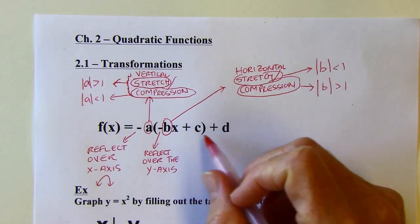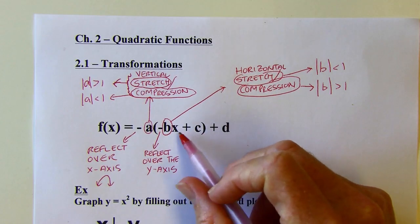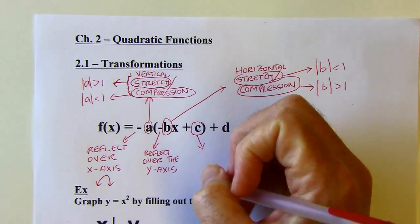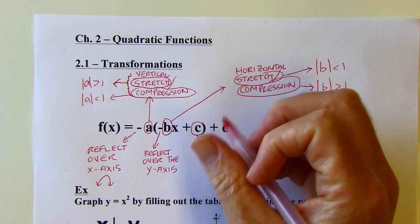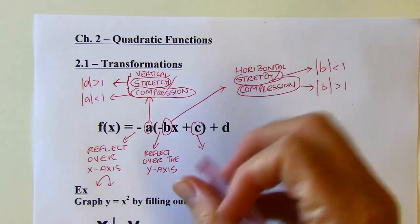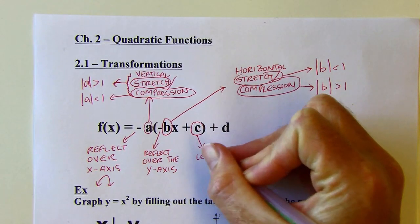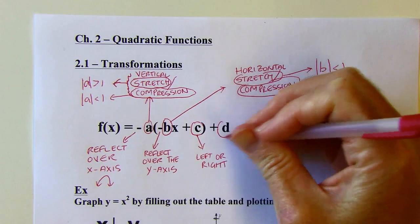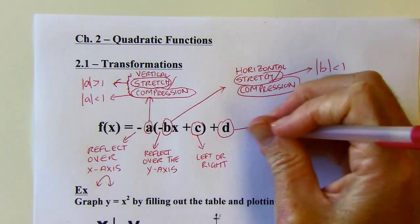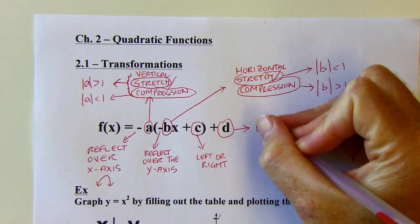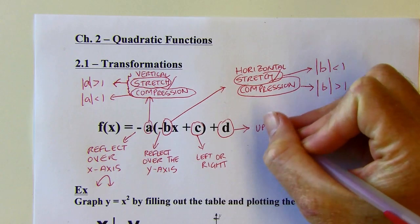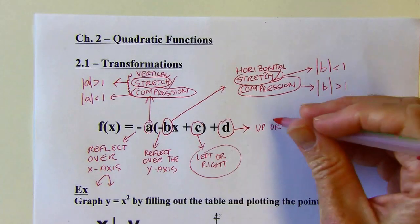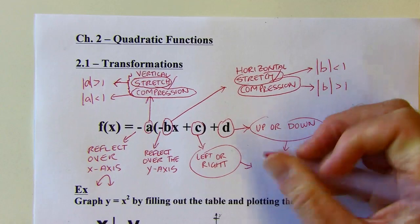When we have something added or subtracted — c could be positive or negative — the c value is going to move things left or right, so it's a translation that shifts things left or right. Something added to or subtracted from the end will move things up or down; both of these are called translations.